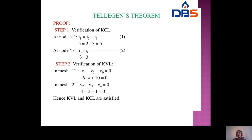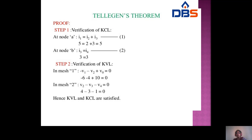Since KCL and KVL are both satisfied, we verify the algebraic sum of powers equals zero: using P = V×I for all branches and confirming the total is zero. Hence Tellegen's (intelligence) theorem is proved — the algebraic sum of powers in all N branches of the network equals zero.